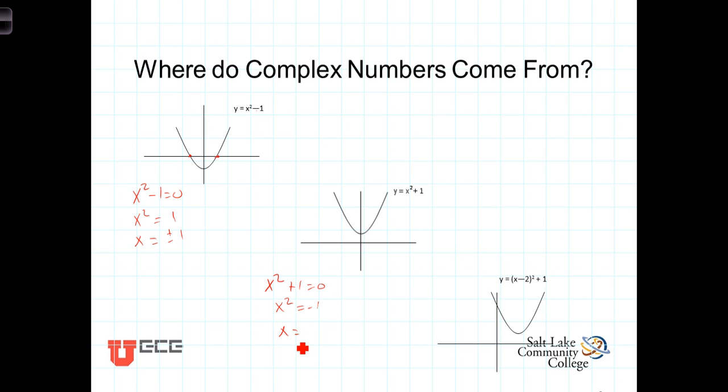There's no number that when multiplied by itself equals negative 1 in the real number system. Well, that's not very satisfactory. There's got to be a solution. Just because we changed the sign from minus to plus and suddenly we don't have solutions? There's got to be a solution. So we defined or we invented the solution to that equation. We called it i. So we have x equals plus or minus i, where i is defined as the square root of negative 1.